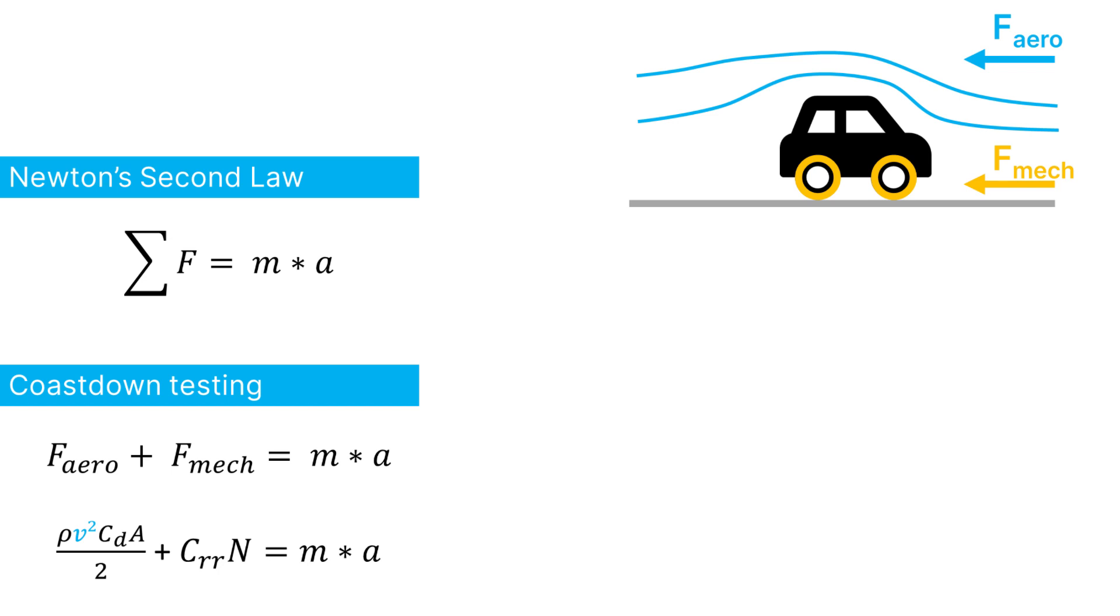And then there's the aerodynamic resistance, which also contains a coefficient, CD, which is the drag coefficient. This one is multiplied by the density, which is known, by the frontal surface area of the vehicle, which is also known, and, importantly, by the square of the velocity.